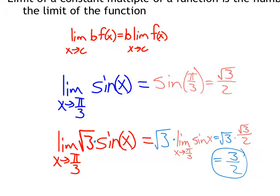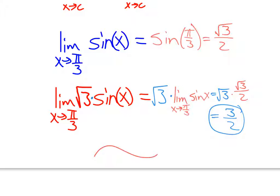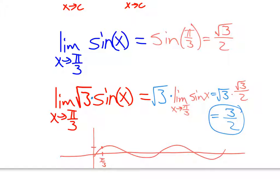The limit is the y-value that your function is getting close to as x gets close to whatever number you're choosing. As we look at our sine curve, as x approaches π/3, our y is approaching √3/2. In this case it does equal √3/2 because we have a continuous function. In other cases it doesn't necessarily have to equal it — it's just what we're approaching.